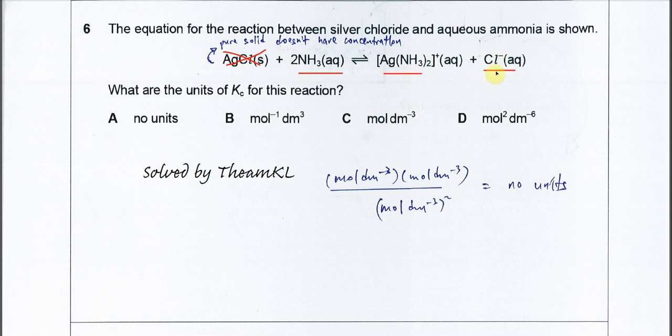So it's product over reactant. The product: silver complex ion here with the chloride. They have mole per dm cubed and mole per dm cubed over the ammonia.